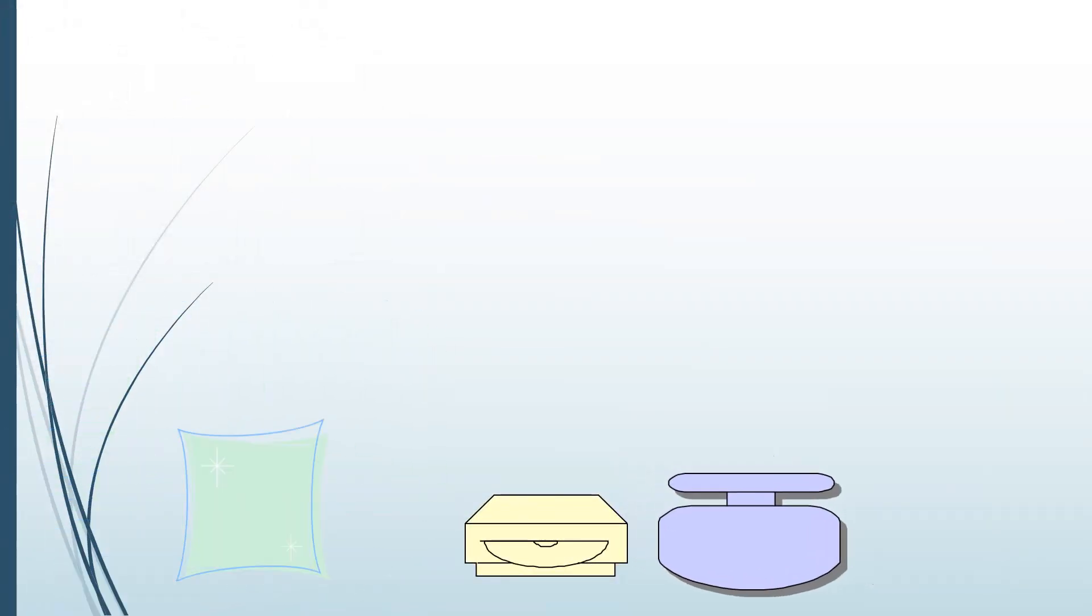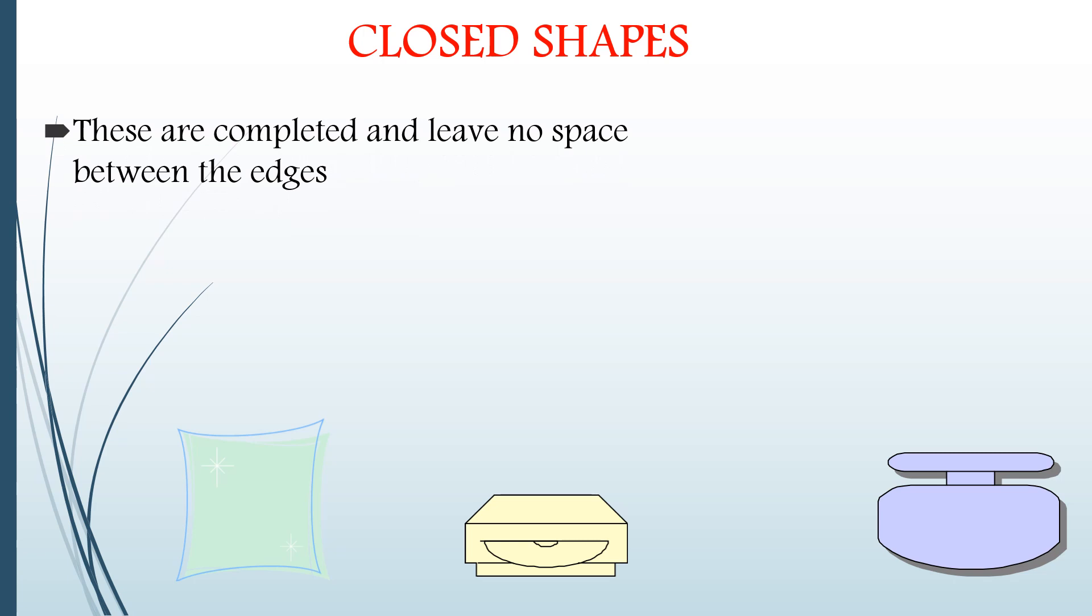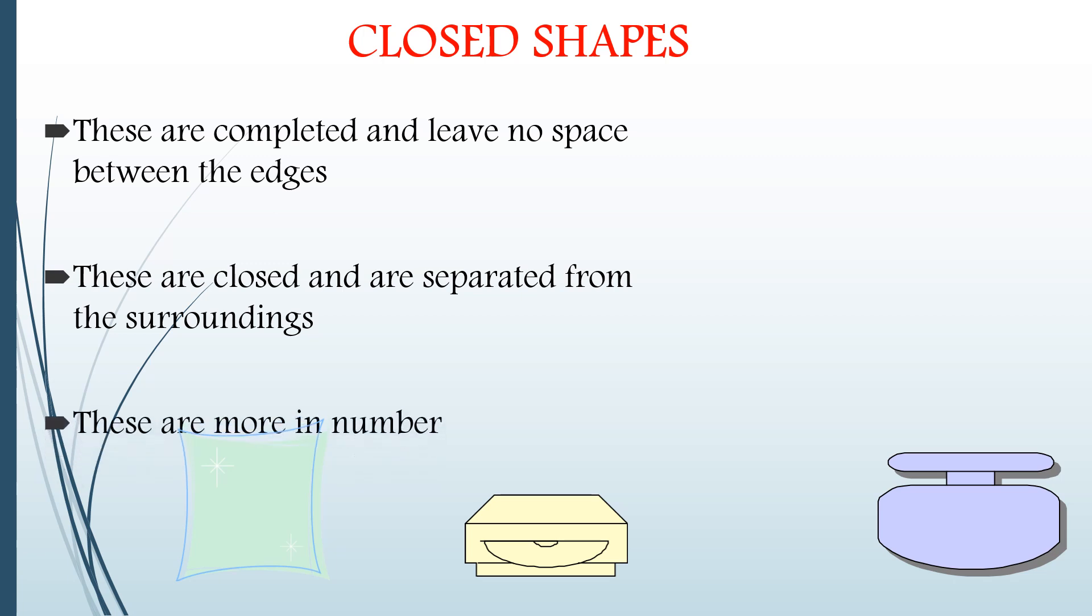Just have a look at these shapes. These shapes are called closed shapes. These shapes are completed and leave no space between the edges. These are closed and are separated from the surroundings. These are more in number. Just have a look at these shapes also. They are also examples of closed shapes.